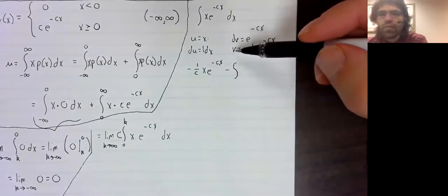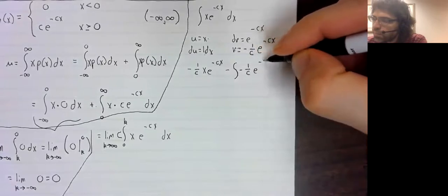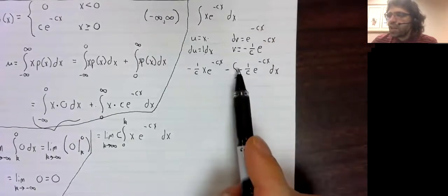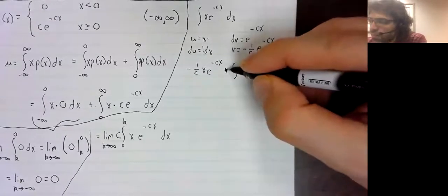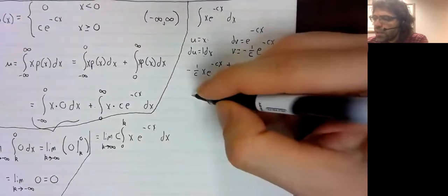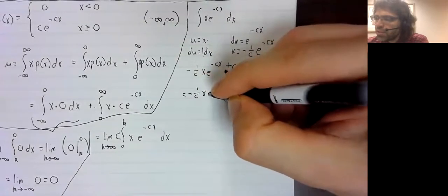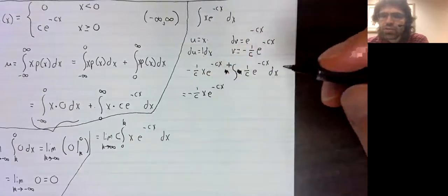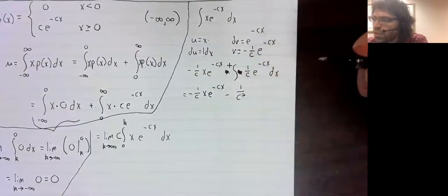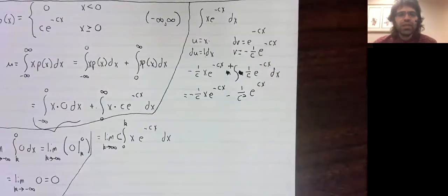Minus the integral of v du. This negative sign and this negative sign will cancel. And we get negative 1 over c, x, e to the negative cx. Minus, minus, 1 over c squared, e to the negative cx.